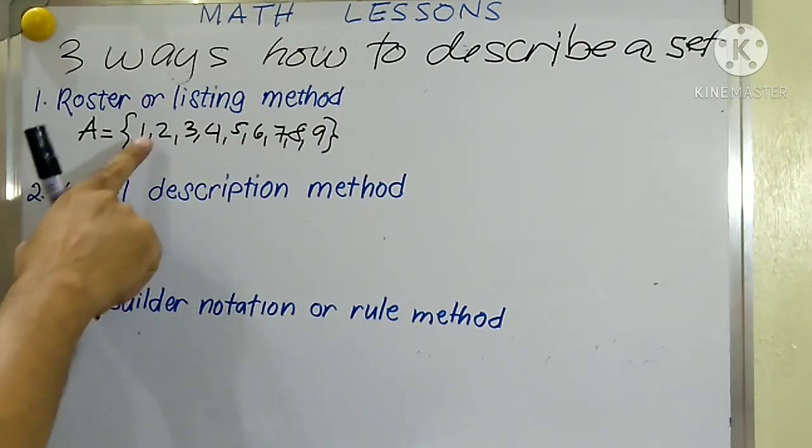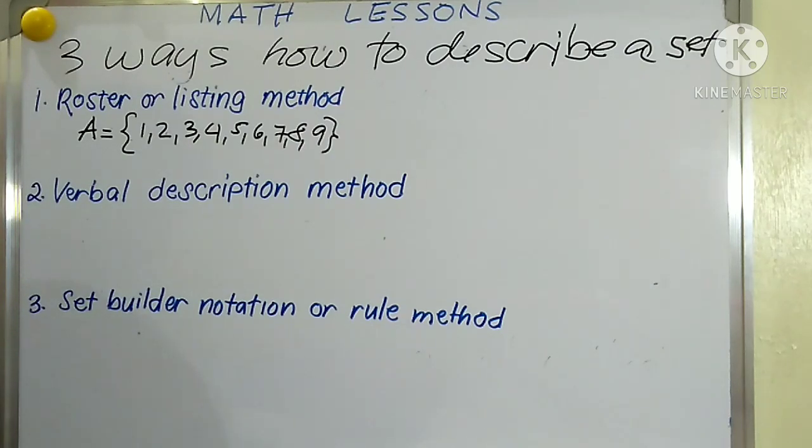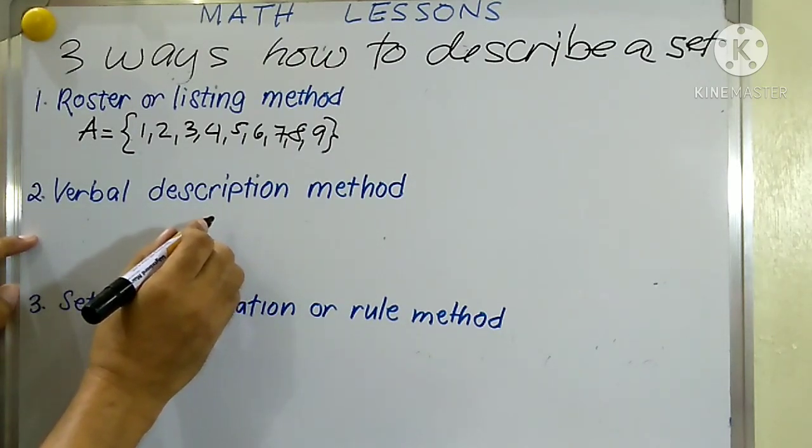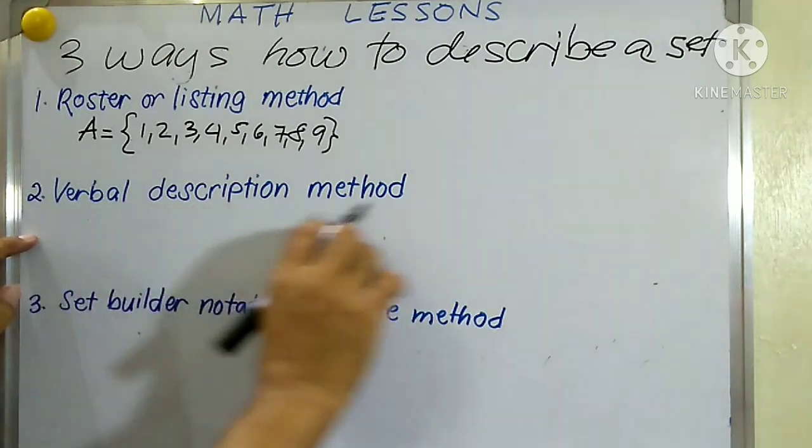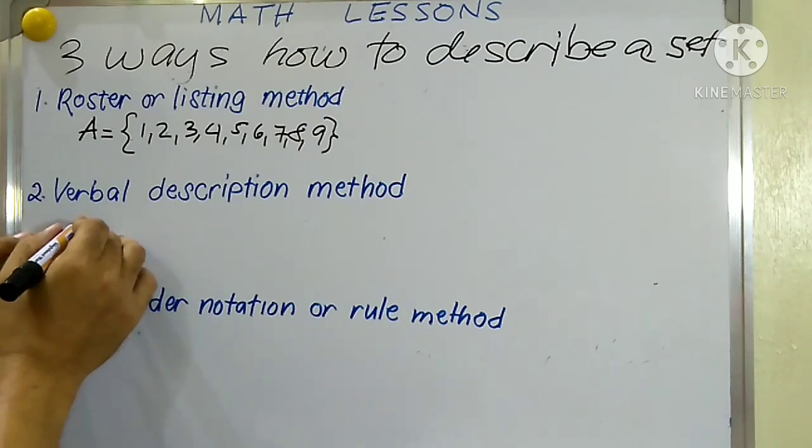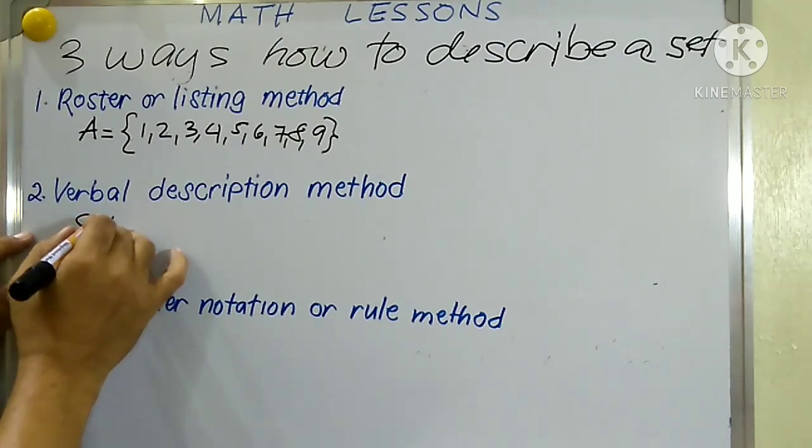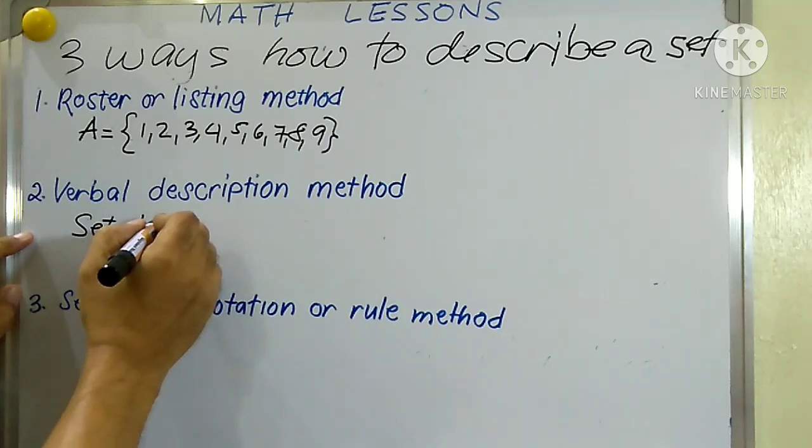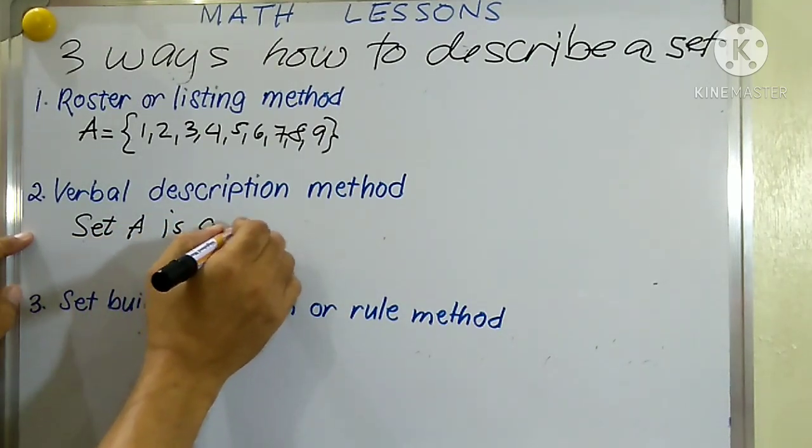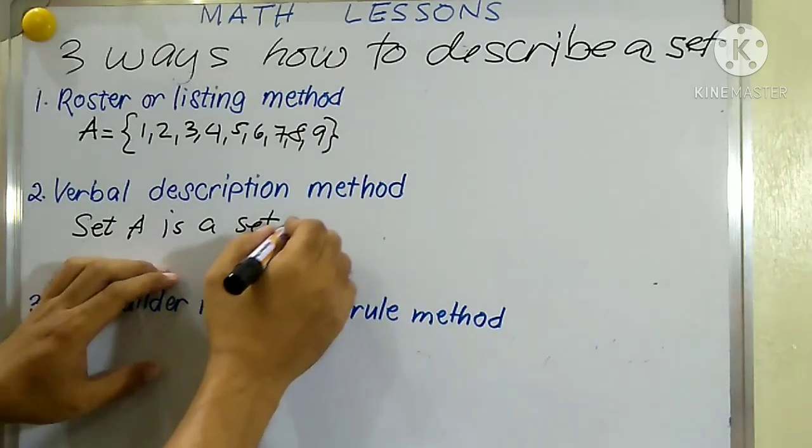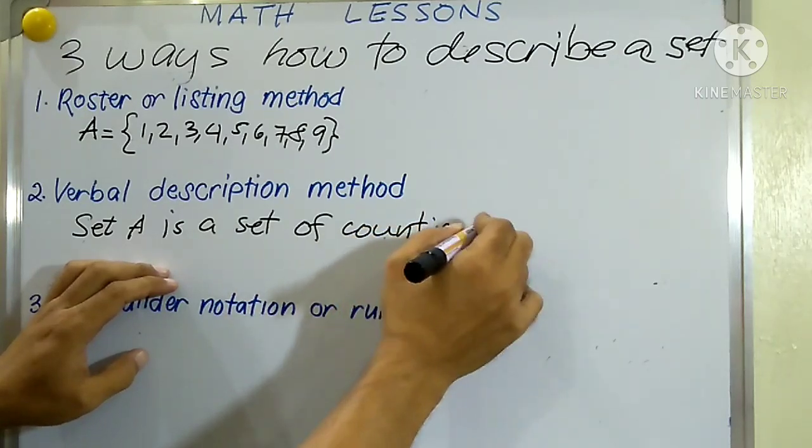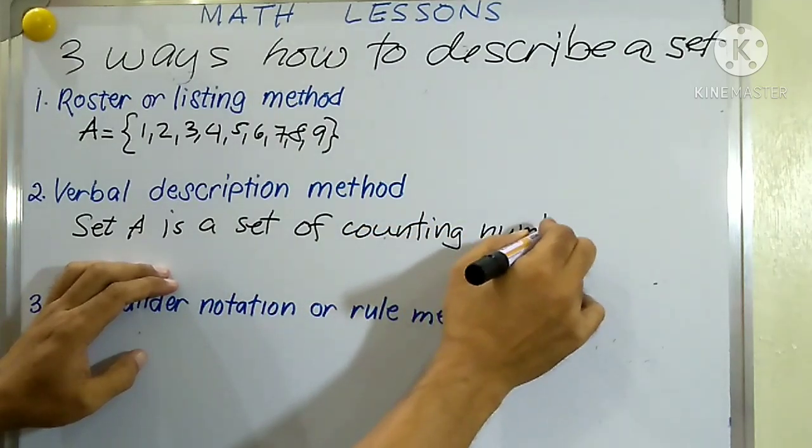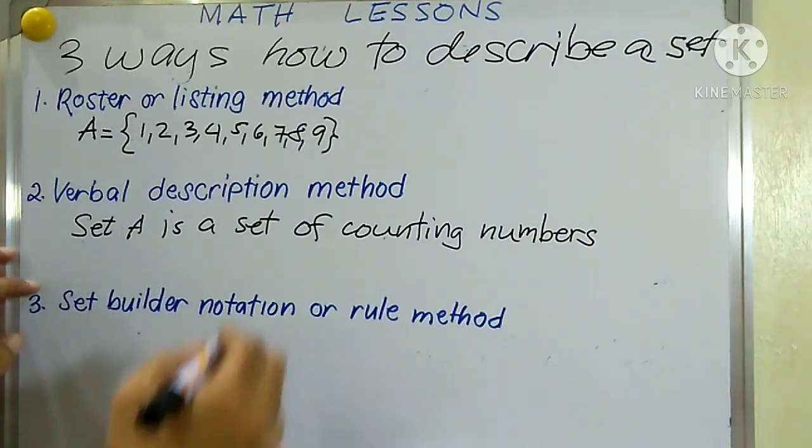Another way is by verbal description method. So you are going to write your set in a sentence. You say set A is a set of counting numbers less than 10.